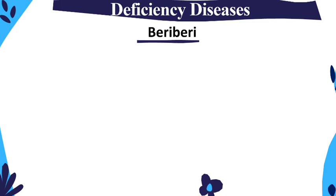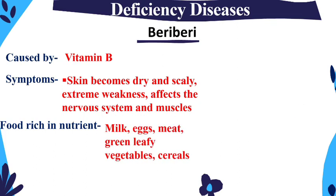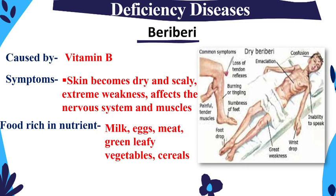Next is Beriberi, caused by Vitamin B deficiency. Symptoms include dry and scaly skin, weakness, and problems with the nervous system. Foods rich in Vitamin B include milk, eggs, meat, green leafy vegetables, and cereals, which can protect our body from Beriberi. Here you can see a person who has become very weak due to this disease.